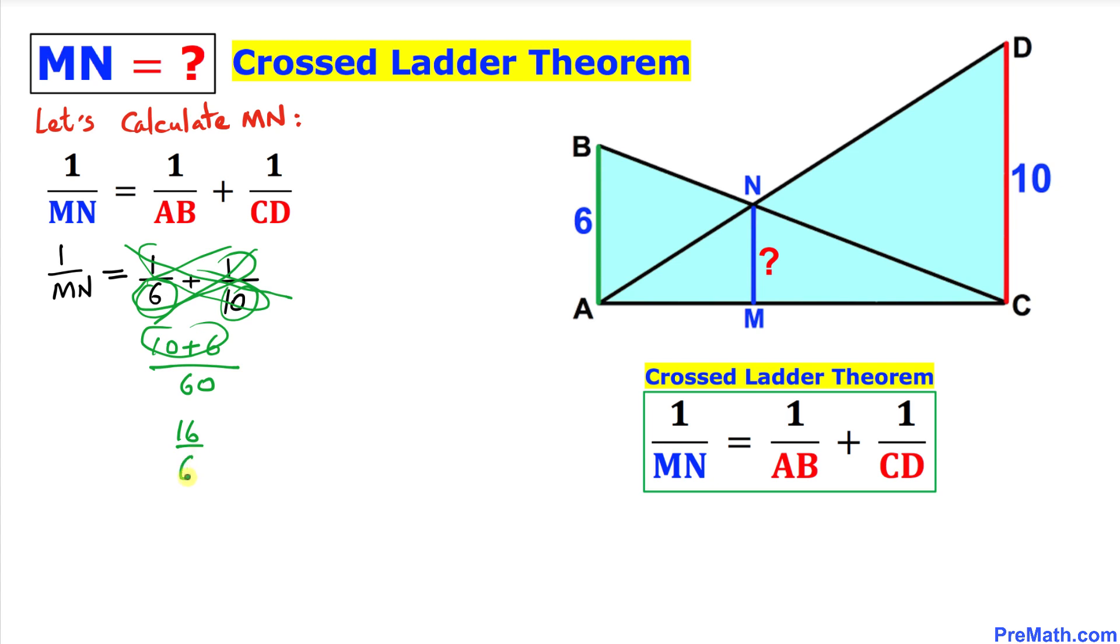Thus we got 16 over 60 on the right-hand side and we have 1 over MN on the left-hand side. Let's flip both sides over, so we can write MN over 1 equal to 60 over 16. So that means our MN turns out to be 3.75.